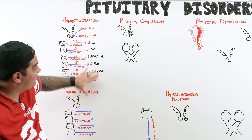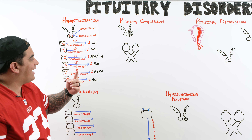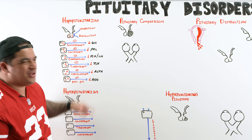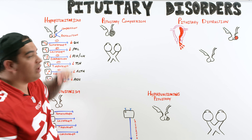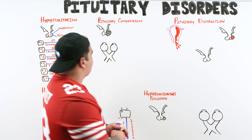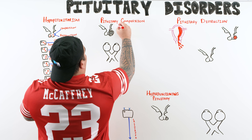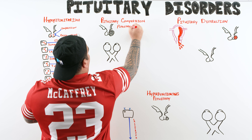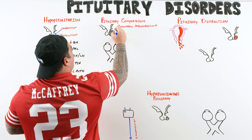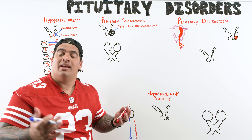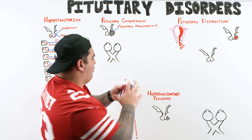The most commonly affected hormones are growth hormone, prolactin, and the gonadotropins — TSH and ACTH are usually lost last. Now let's talk about causes of pituitary compression or destruction. The first and really common one seen in clinical vignettes is the pituitary macroadenoma.